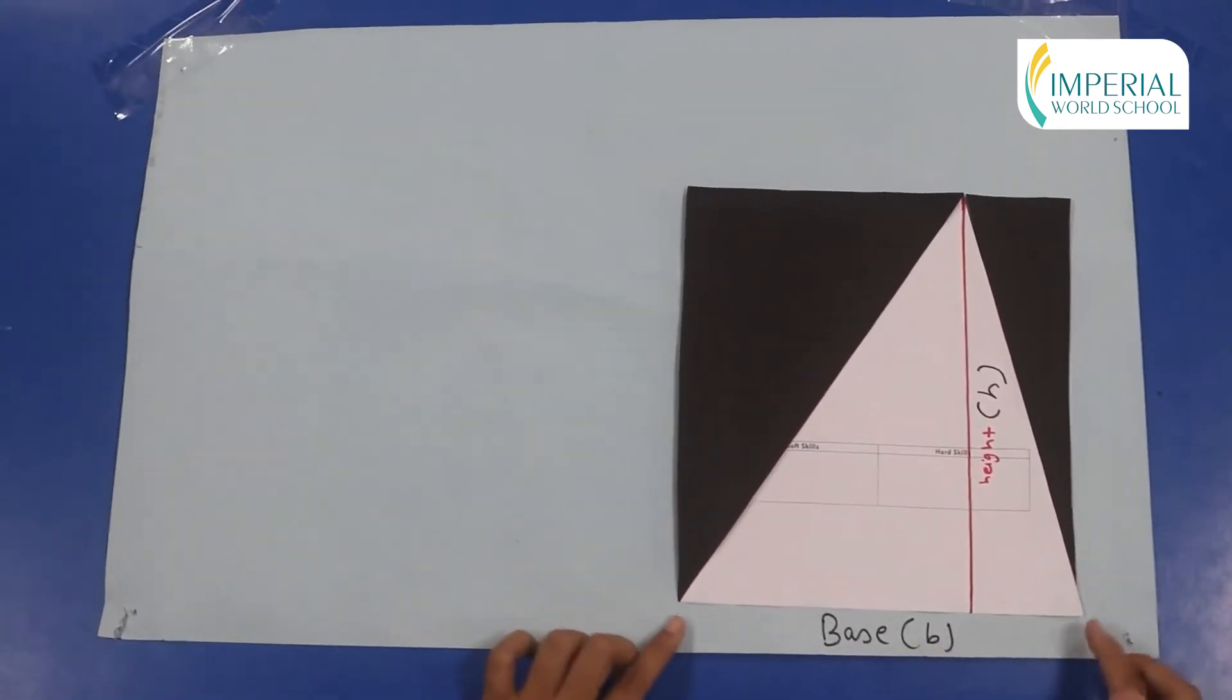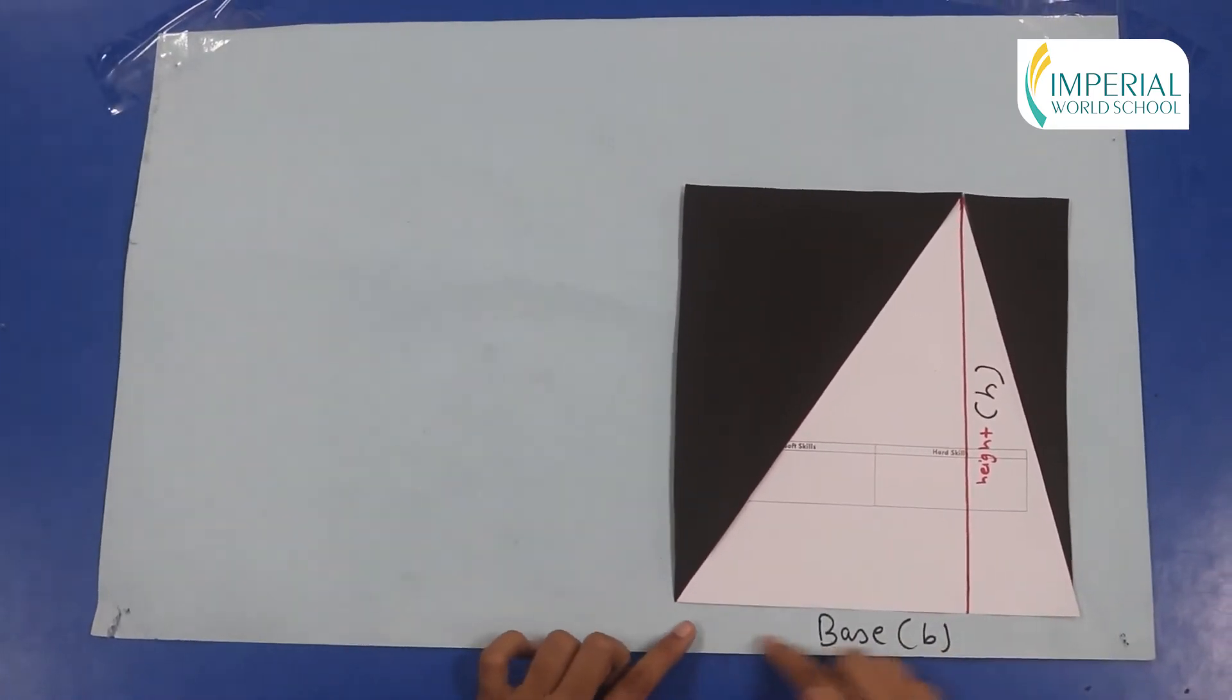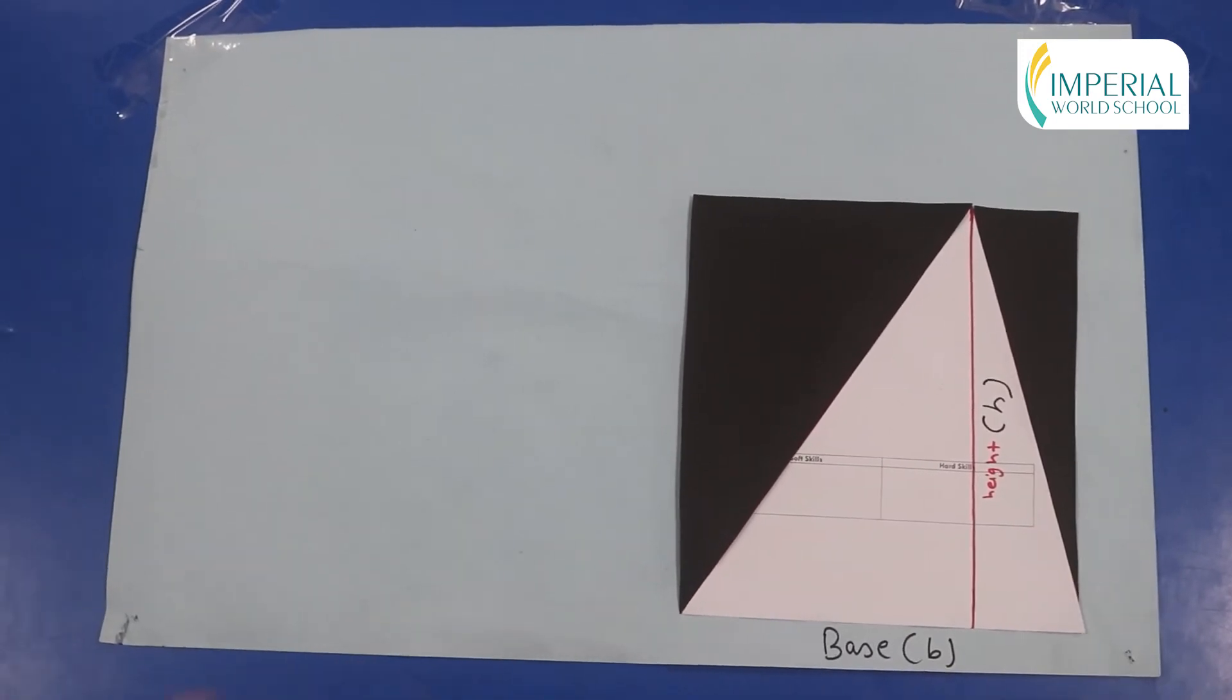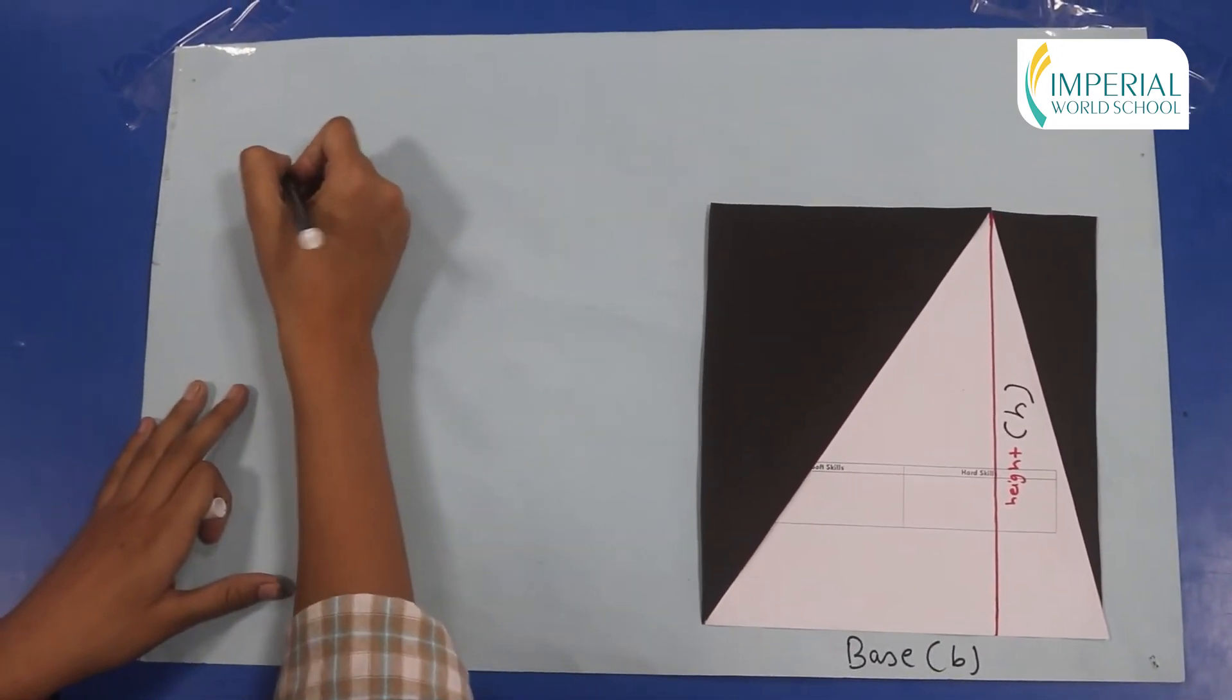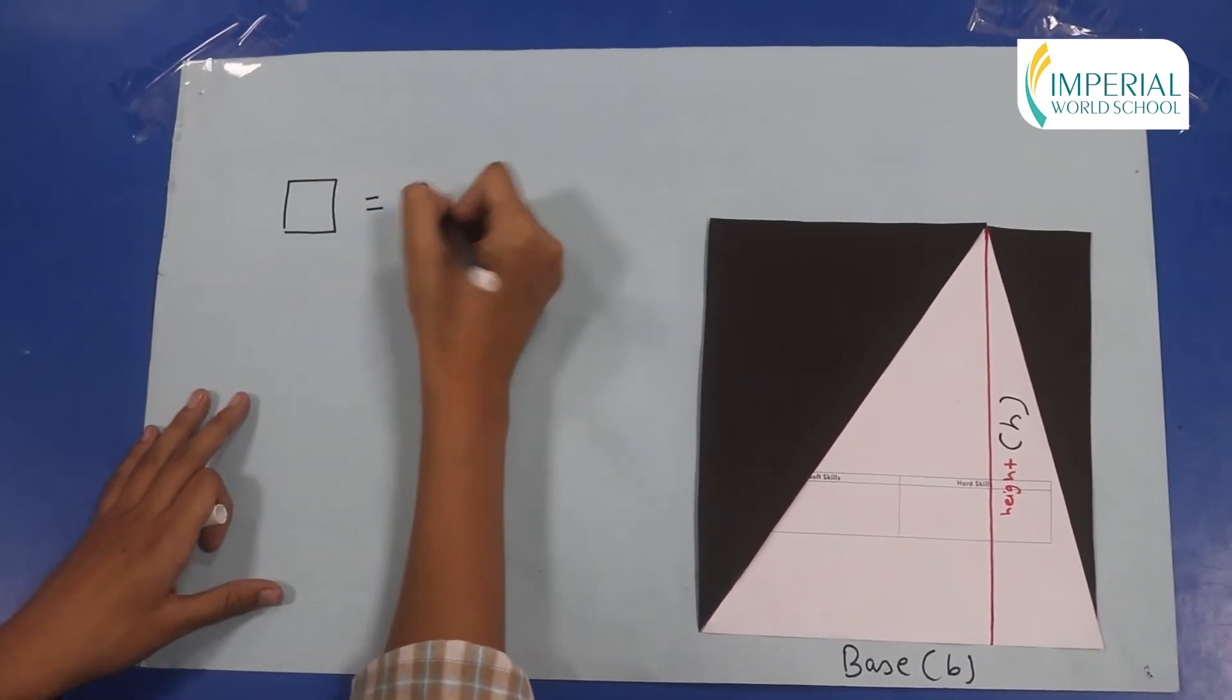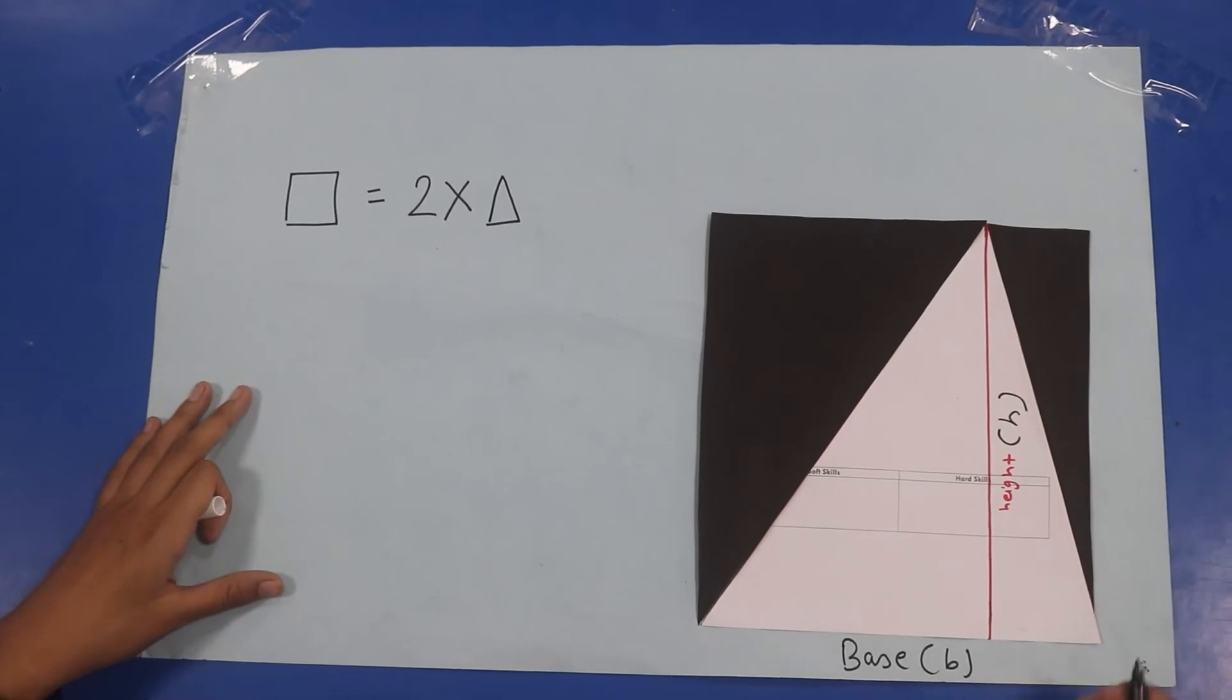Now we know that this is the base and this is the height of this triangle and this is the length and this is the breadth of this rectangle. So the area of rectangle equals to two times the area of this triangle as we are using two triangles over here.